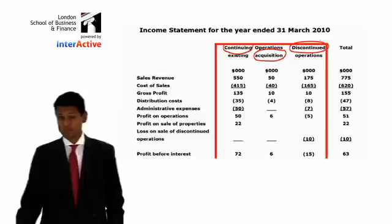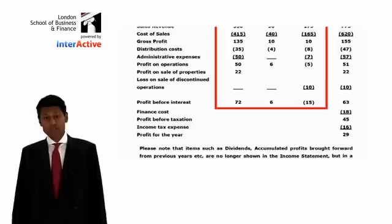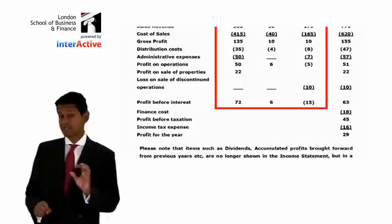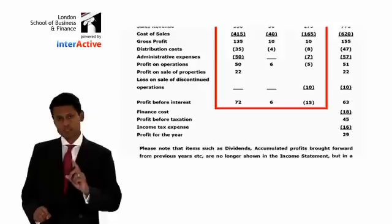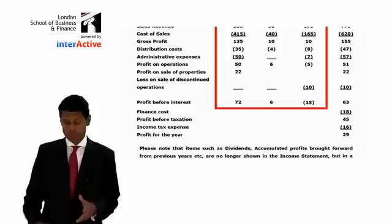Sales revenue, cost of sales, gross profit, distribution, admin, profit on operations, profit on sale of properties — these are known as exceptional items. Some people call them super-exceptional: large items, normal in nature but just large in size. Then you have your finance cost. Notice the profit before interest is shown for each of the three columns — continuing, acquisitions, and discontinued — but the finance cost, things like interest, are shown just for the total, for the whole company. Then you have profit before tax, the tax itself — income tax, corporation tax — and then profit for the year, which is after tax.